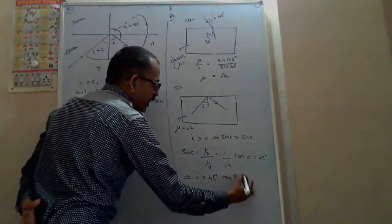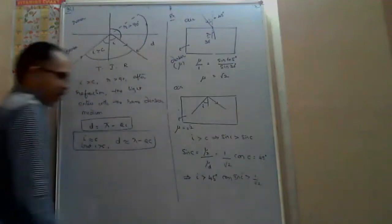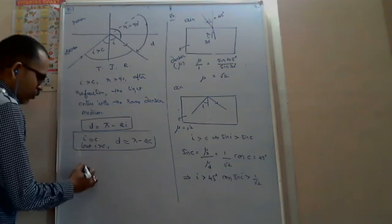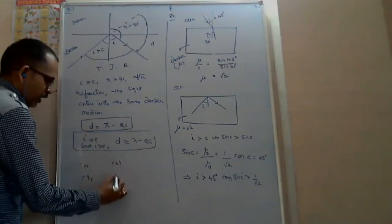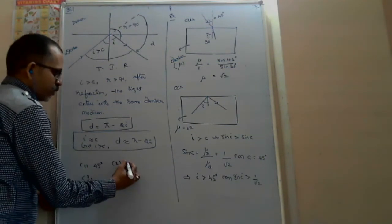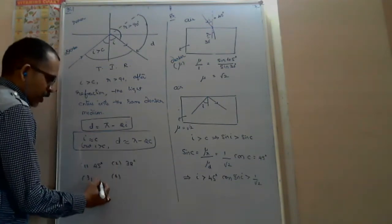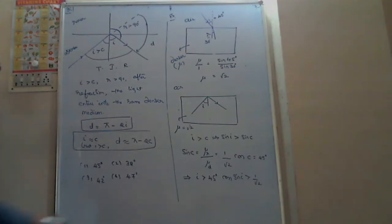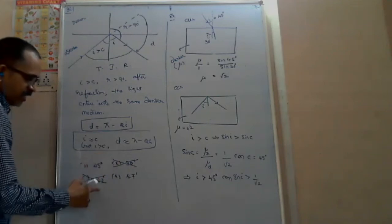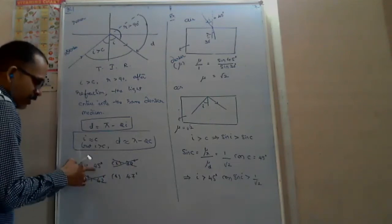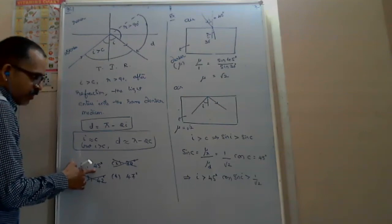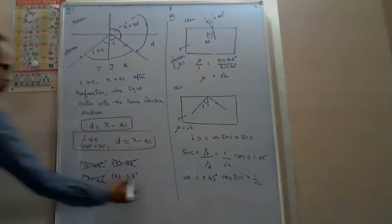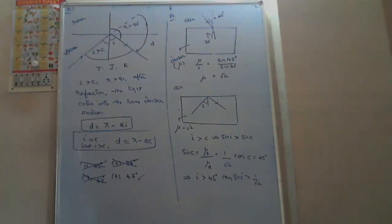Therefore, for total internal reflection, i must be greater than 45 degrees. From the given options — 45, 38, 42, and 47 degrees — the options 38 and 42 are less than 45, so they are wrong. The answer 45 is exactly equal to c, not greater, so we must choose 47 degrees.